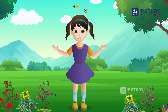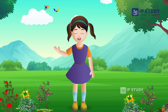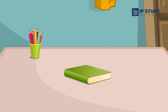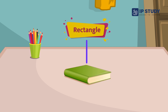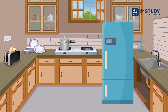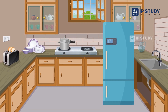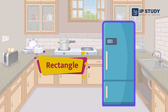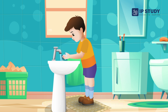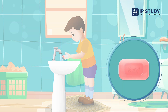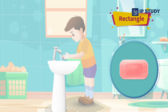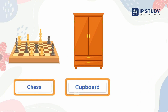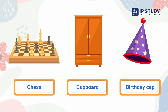Let's look at some examples of things we find around us in rectangle shape. Do you see a book kept on the table? The shape of this book is a rectangle. The refrigerator we use at home to keep food and vegetables fresh — its shape is also a rectangle. The soap we use for cleaning our hands — its shape is also a rectangle.